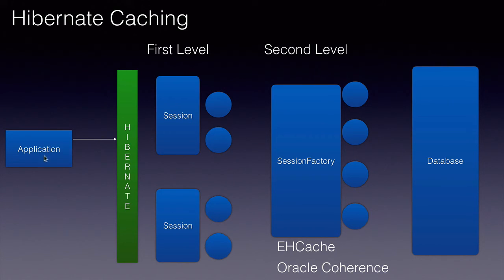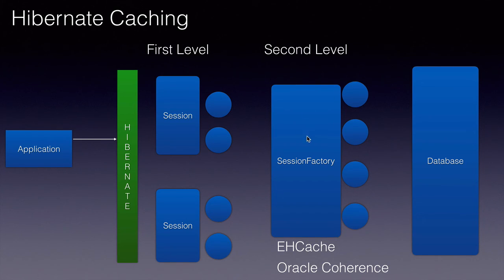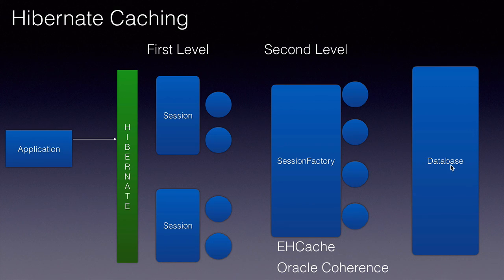The way it works is if our application tries to find an object, Hibernate will first check for it in the first level cache. If it is available, it will use it. If not, it will try the second level cache. If it is available there, it will use that object and data. If it is not available even in the second level cache, that is when Hibernate will go against the database.